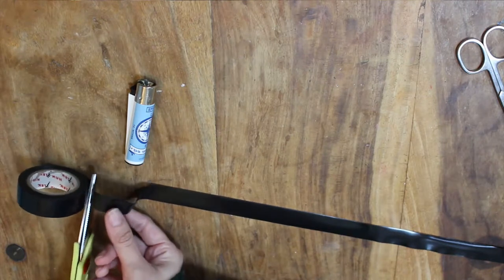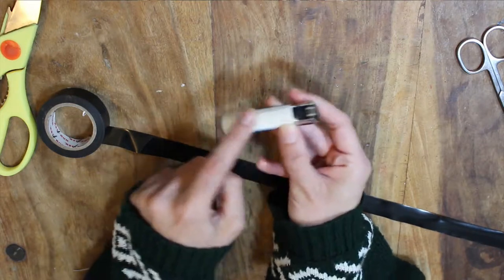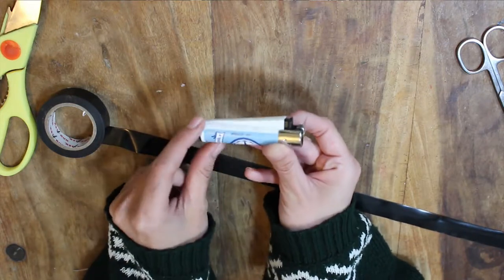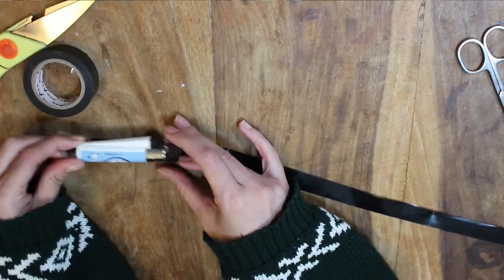Snip that tape off. This front bit of the lighter, the bit where the gas button is, that's going to be the front of the tuxedo where the bowtie goes. You want to stick this necklace piece along the edge of that.